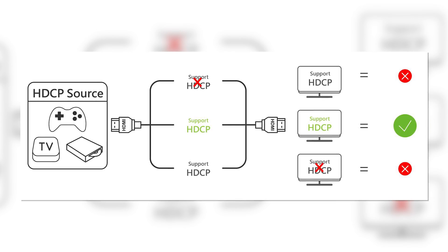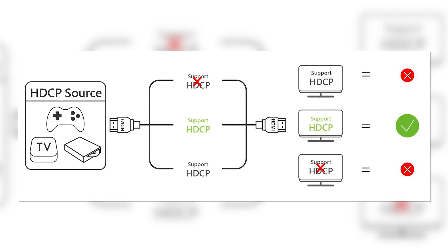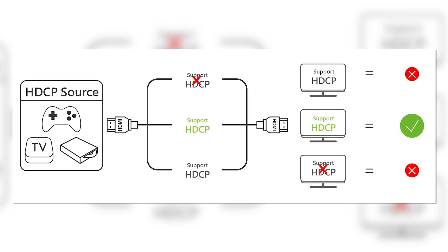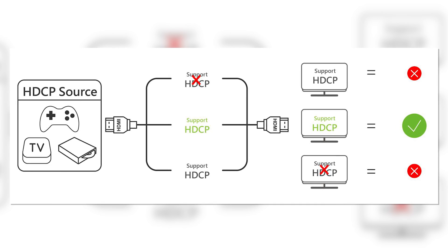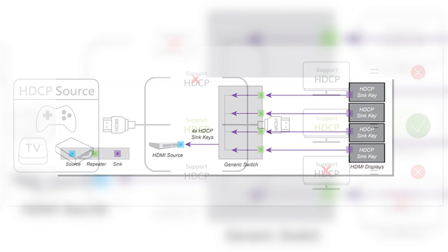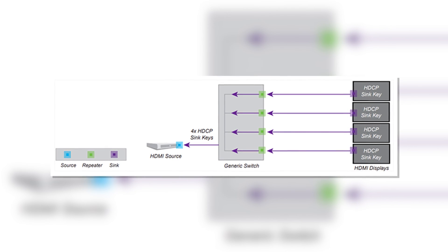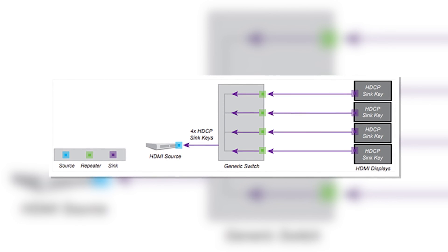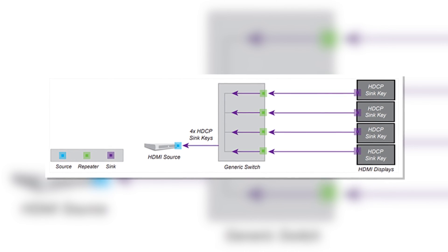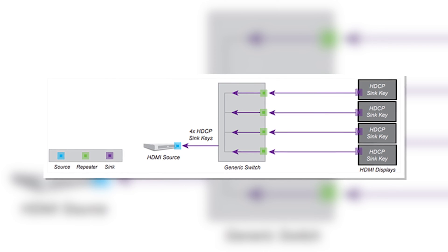HDCP 2.3 is the latest version, which offers even more advanced content protection. On top of that, it features enhanced security measures to resist sophisticated hacking attempts. One of the cool things about it is you get high dynamic range support, which is going to be very good for vibrant images.